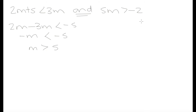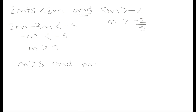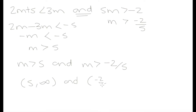On the other side, if we solve for m, we can divide both sides by 5. So we have m is greater than negative 2 over 5. These are our two conditions: m is greater than 5 and m is greater than negative 2 over 5. In interval notation, we would have 5 as our lower bound and positive infinity as our upper bound for the first, and negative 2 over 5 as our lower bound and infinity as the upper bound for the second.